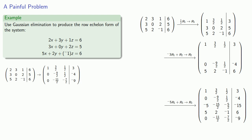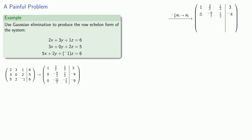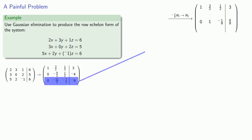We'll continue Gaussian elimination by moving to the second row. Since the leading coefficient in the second row is -9/2, we'll multiply everything in that row by -2/9 to make that leading coefficient equal to 1: 0 × -2/9 = 0, -2/9 × -9/2 = 1, -2/9 × 1/2 = -1/9, and -2/9 × -4 = 8/9. This gives our new second row, and the third row remains unchanged.